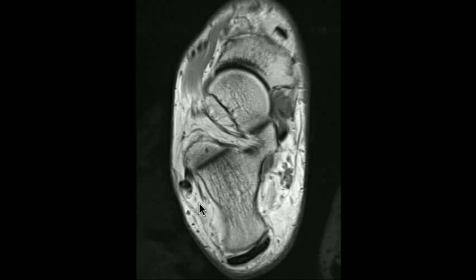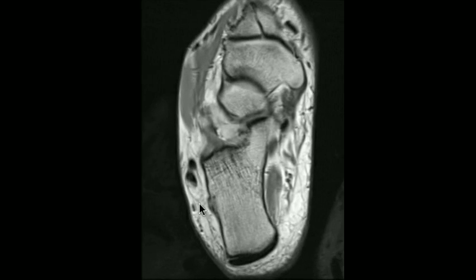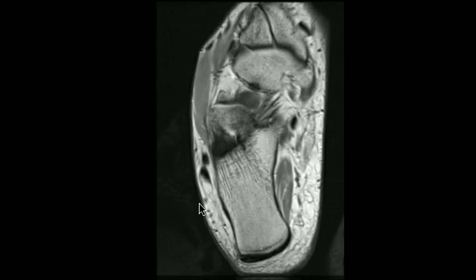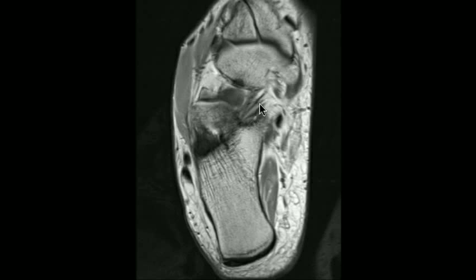Along the medial aspect of the ankle joint is the medial deltoid ligament. This is generally not well evaluated on axial images and is best seen on coronal acquisitions. One other ligament that we can generally see on axial acquisitions is the so-called spring ligament, or the calcaneonavicular ligament. This is located further distally and is identified as a linear structure extending from the anterior aspect of the calcaneus to the medial aspect of the navicular bone, and should be continuous and taut.